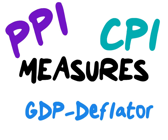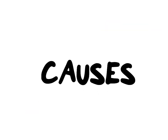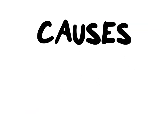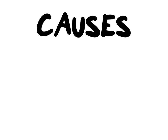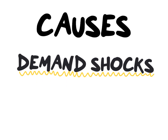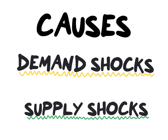For more information on the different measures used to calculate inflation, be sure to watch the explainer video. The focus of today will be on the different causes of inflation. Two broad categories explain the causes of inflation, namely demand shocks and supply shocks.